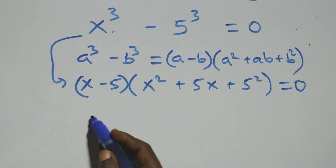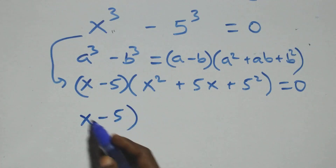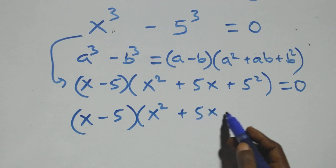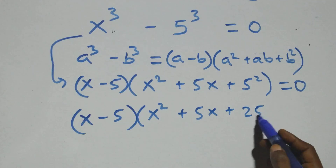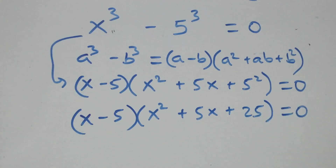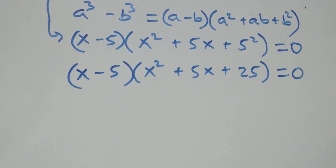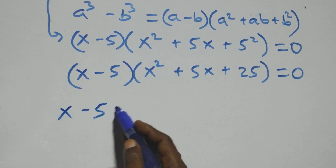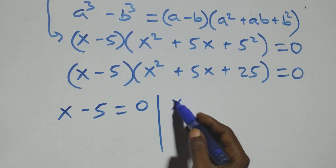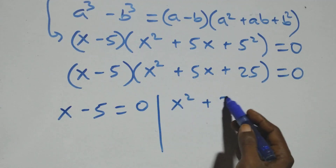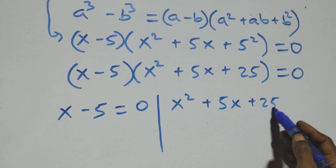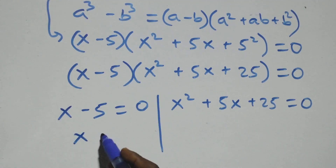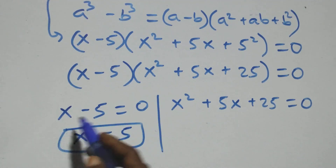Here also we have two possible cases: x minus 5 equals 0, or x squared plus 5x plus 25 equals 0. Solving the first side, we get x equals 5, which is also a real solution. On the other side, we again have a quadratic equation, where a equals 1, b equals 5, and c equals 25.